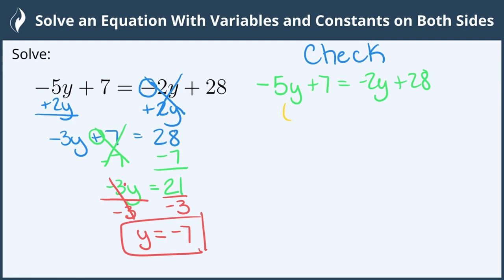And we'll substitute every time we see the variable, and we'll substitute negative 7 in for that variable. We get negative 5 times negative 7 plus 7 equals negative 2 times negative 7 plus 28.